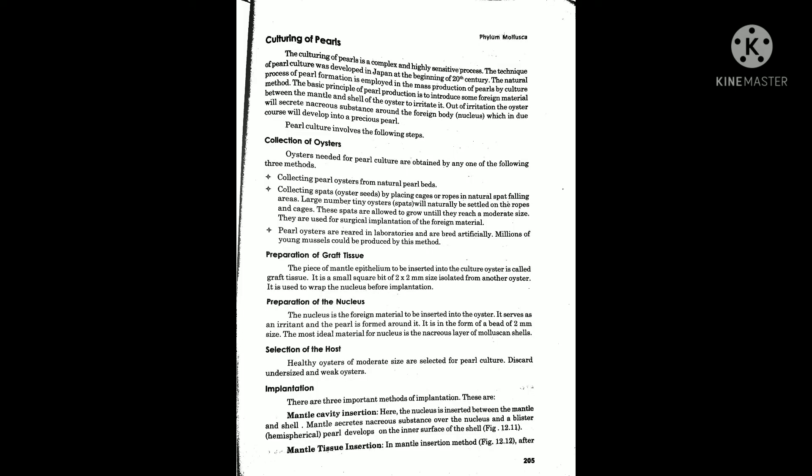The basic principle of pearl production is to introduce some foreign material between the mantle and the shell of the oyster to irritate it. Out of this irritation, the oyster will secrete a nacre substance around the foreign body, which will develop into a precious pearl.